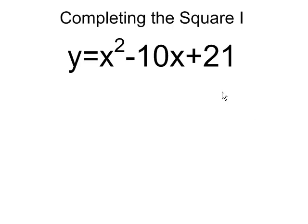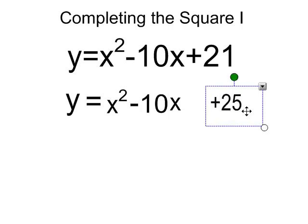My first step is to figure out what the perfect square trinomial would be if I were just given these first two terms. And so, this would become y equals x squared minus 10x. And so that part stays the same, and if this were a perfect square trinomial at this point, I would know that there should be a plus 25 in there.